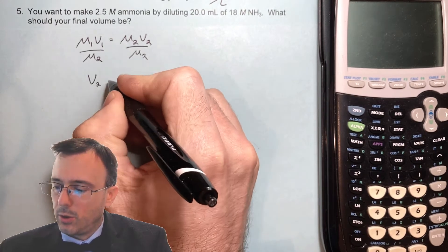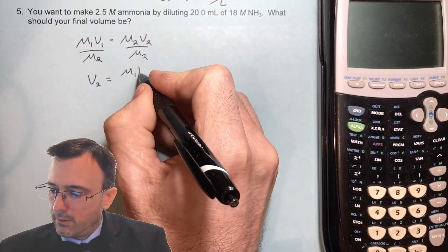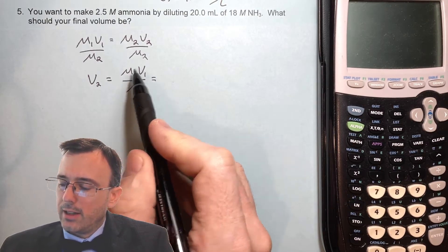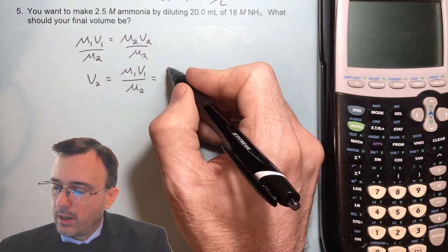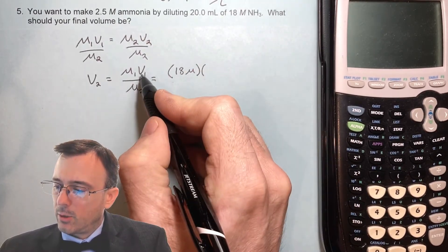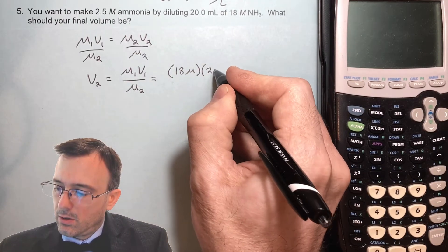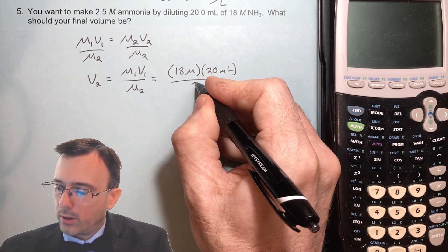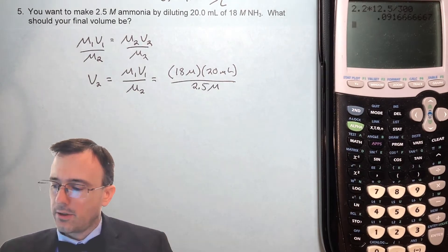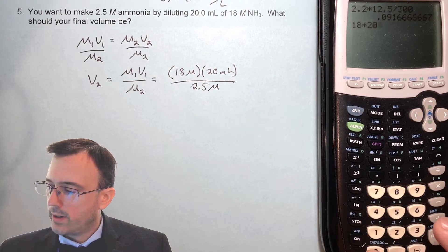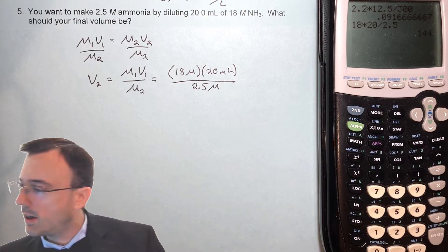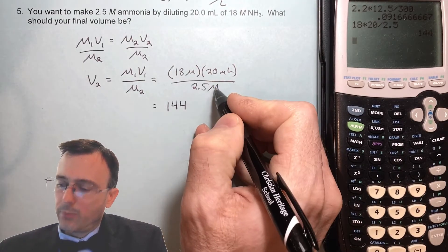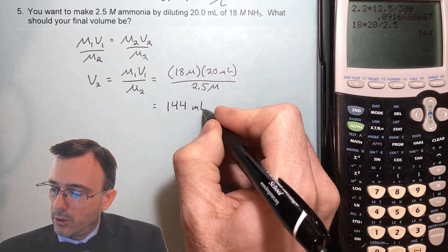That leaves us with V2 equals M1V1 over M2. Plugging in numbers: our initial molarity is 18 molar, our initial volume is 20 milliliters, and our final molarity is 2.5 molar. In the calculator, 18 times 20 divided by 2.5 gives us 144. Molar over molar cancels, leaving us with 144 milliliters.